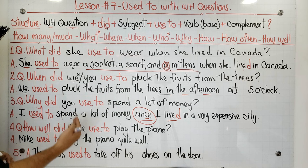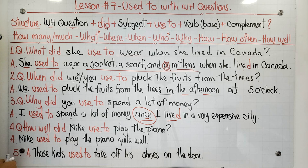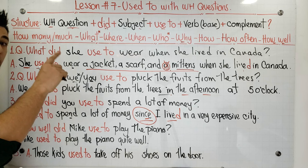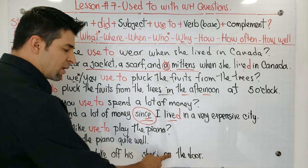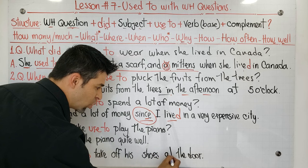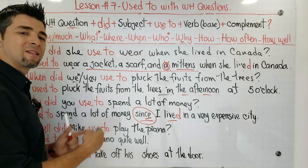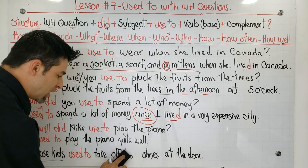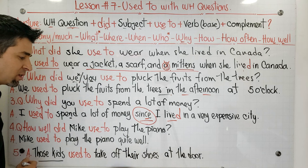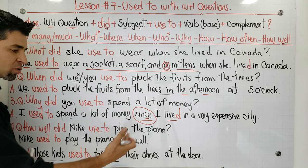Now, guys, look at the final part — number five. This is a homework for you. The sentence is: Those kids used to take off his shoes on the door. There are two mistakes. First, 'on the door' is wrong — it should be 'at the door' or 'by the door.' Second, 'his shoes' is wrong because we're talking about 'those kids,' so it should be the possessive adjective 'their': Those kids used to take off their shoes at the door.